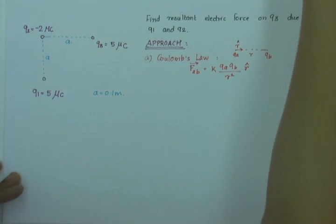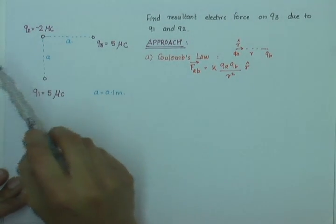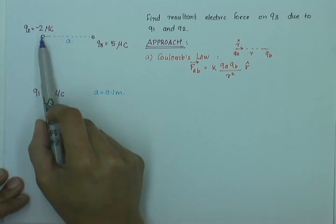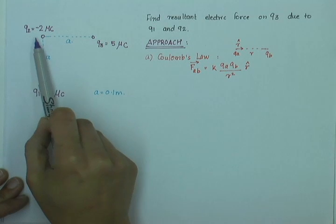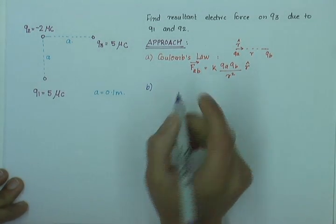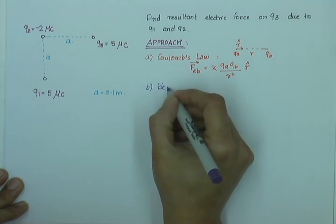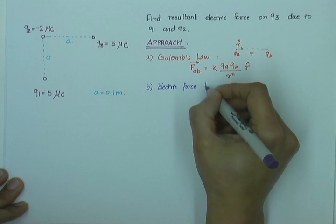The second thing that we will use is that we will use Coulomb's law and find the forces between Q1 and Q3 and Q2 on Q3. And once we have both the forces, then we will remember that electric force obeys superposition.